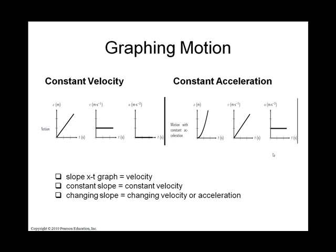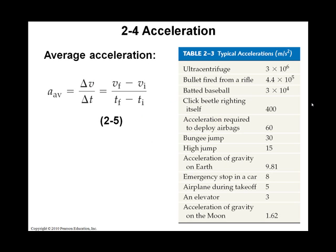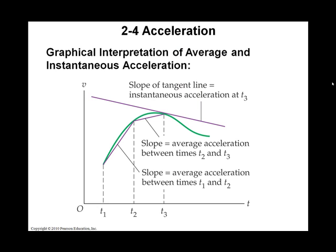To find the acceleration of something, you're going to look at that graph, and the acceleration literally would be the change in velocity over the change in time. That means you take the final velocity minus the initial velocity and divide it by the final time minus the initial time. In other words, it's the slope of the velocity-time graph. The average acceleration is the slope between two points on that velocity graph, and the instantaneous acceleration is the slope of the line tangent to that graph.